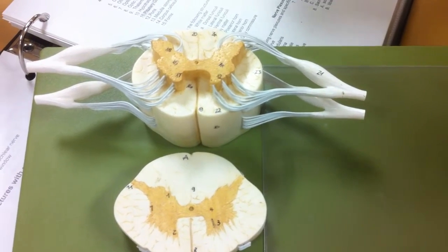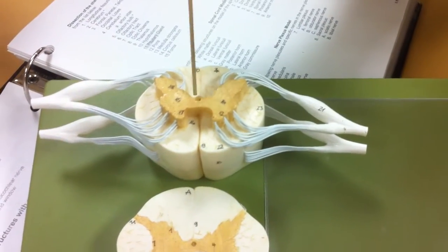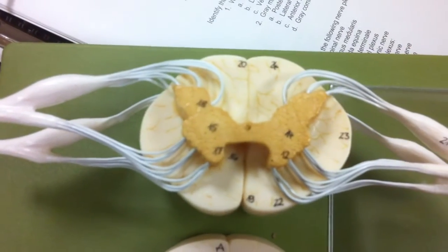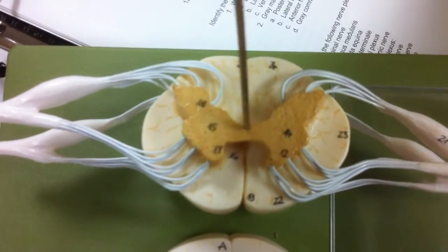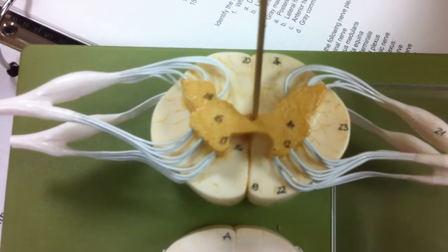And the gray commissure would be in the middle portion right here. And the central canal, this hole right here, sticking my stick in there.